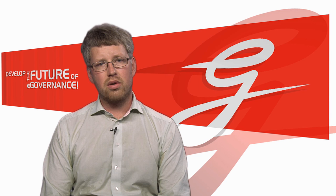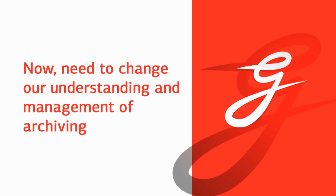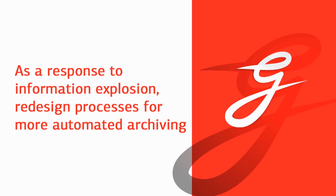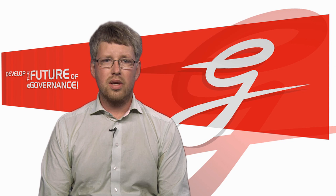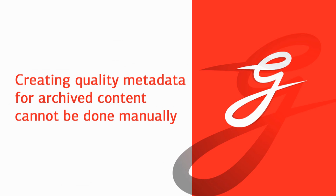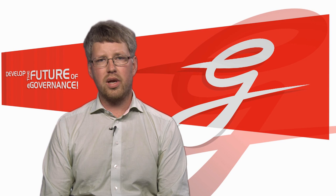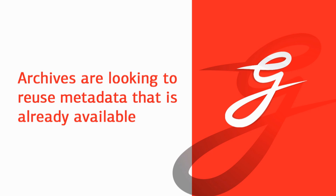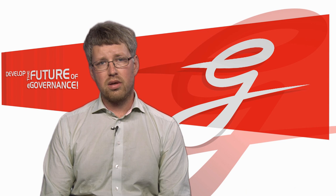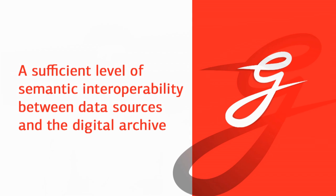These two main drivers have brought the need for some crucial changes in how archiving must be understood and managed in the digital era. First, to respond to the growth of data — the information explosion — archives need to redesign their processes to act in a more automated way. Manual archiving, manual ingest, manual preservation is not possible anymore. Especially the task of creating appropriate metadata for archived content is no longer possible manually. Therefore, most archives worldwide are looking actively at possibilities for reusing metadata already available in source systems as the basis for archival descriptions and finding aids. Archives and institutions must ensure that there is a sufficient level of semantic interoperability between source systems where the data is initially created and the digital archive.